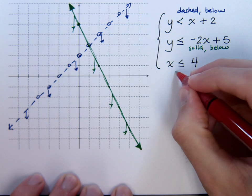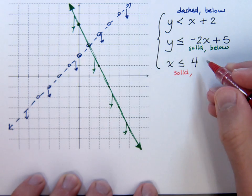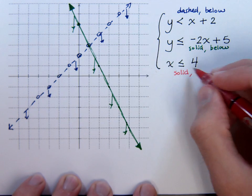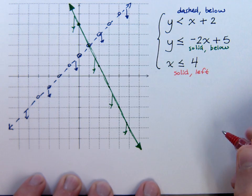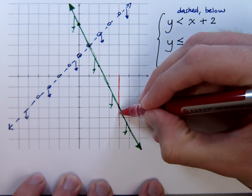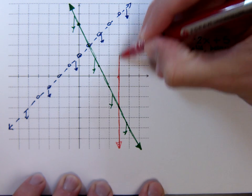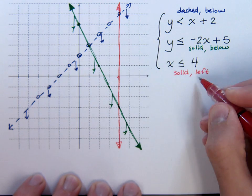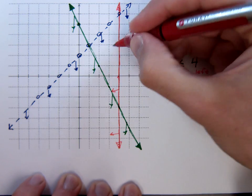Now for this one, we see that we have a solid line. Since this is x, we know this is going to be a vertical line. So it's not shading above or below, but it's going to be shading to the left. So it's a solid line at 4, just like this. Now we need to be shading to the left, so I'm just going to put my little markers here shading over here to the left.